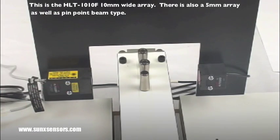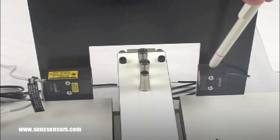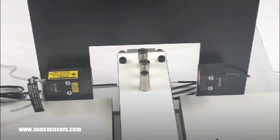Here is the through beam portion. On the left side is the emitter and on the right side is the detector.